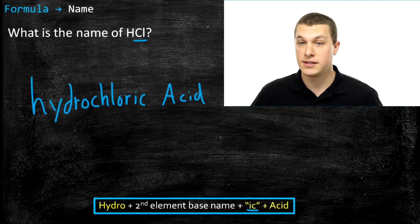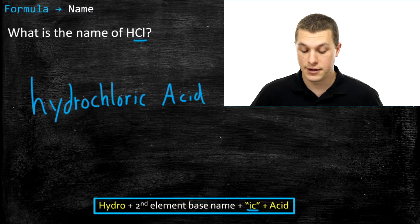We will start with hydro, then the base name of the thing that's not hydrogen. We add ic to it, and then we write acid. Let's do one more.